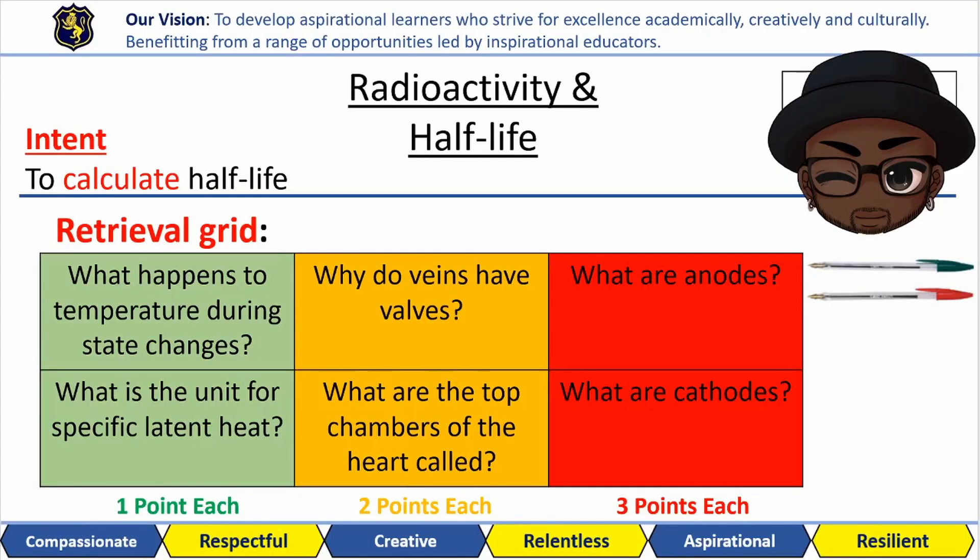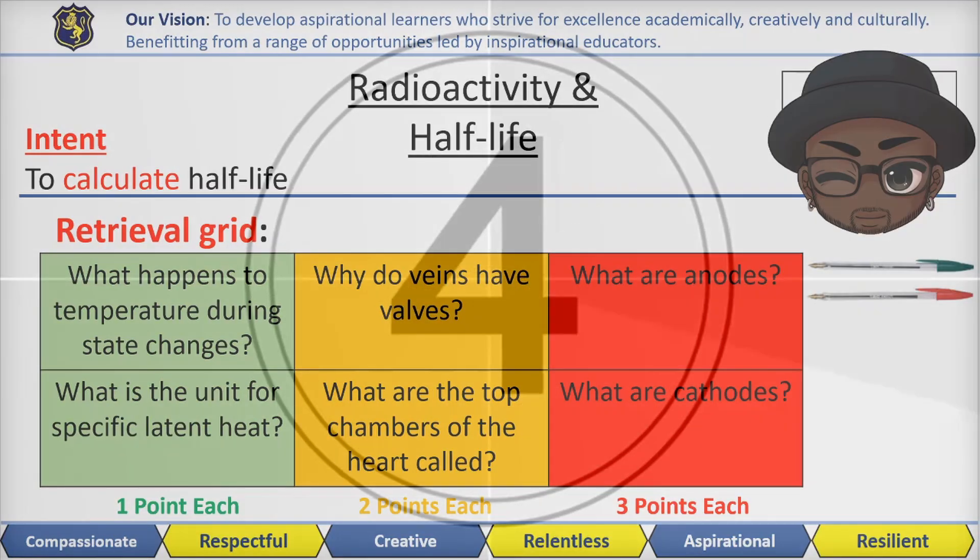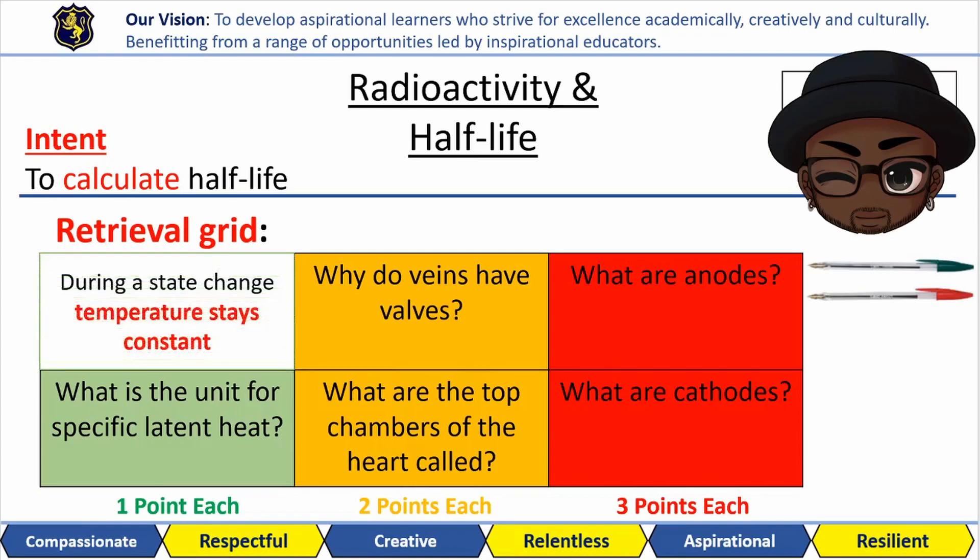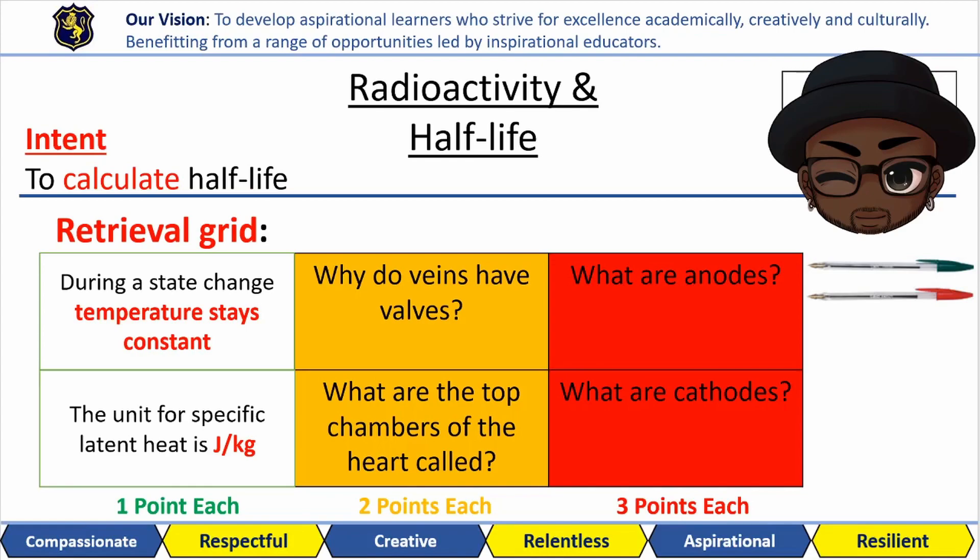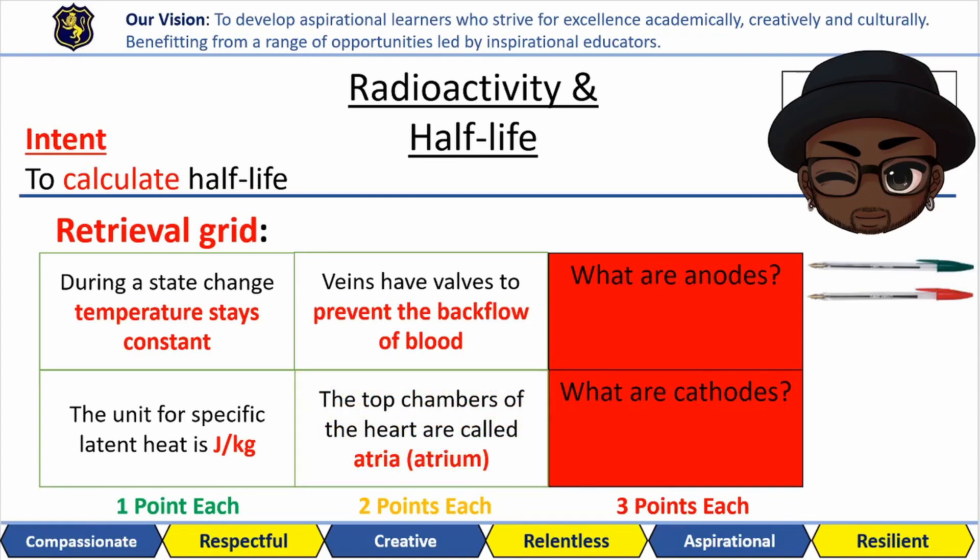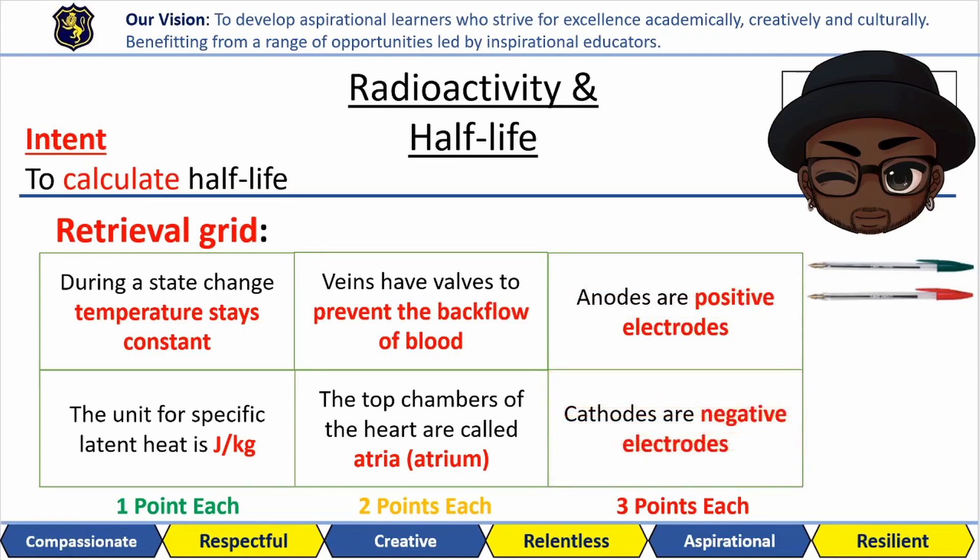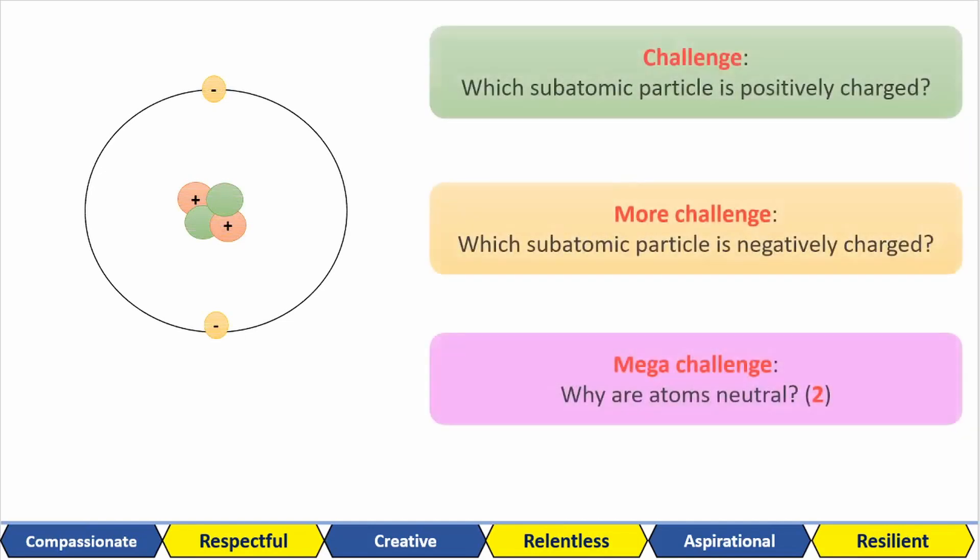Here are the retrieval questions for this lesson. During the change of state, the temperature stays constant. The unit for specific latent heat is joules per kilogram. Veins have valves to prevent the backflow of blood. The top chambers of the heart are called atria. Anodes are positively charged electrodes. Cathodes are negatively charged electrodes. Let's brush up on our knowledge of atoms first.